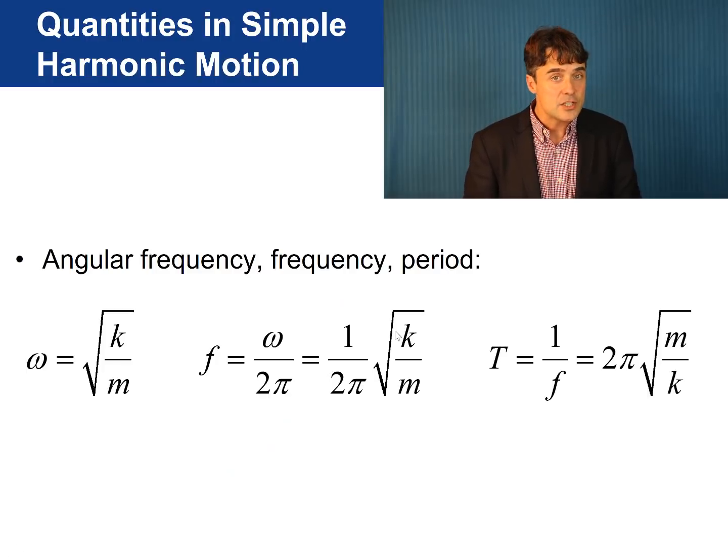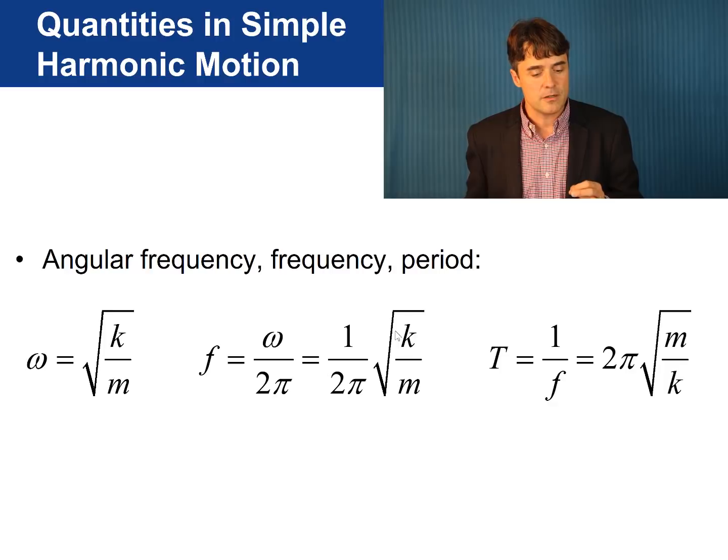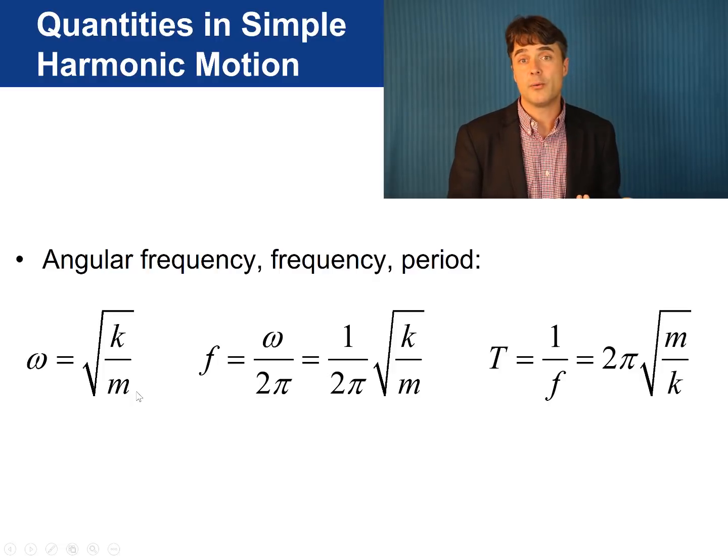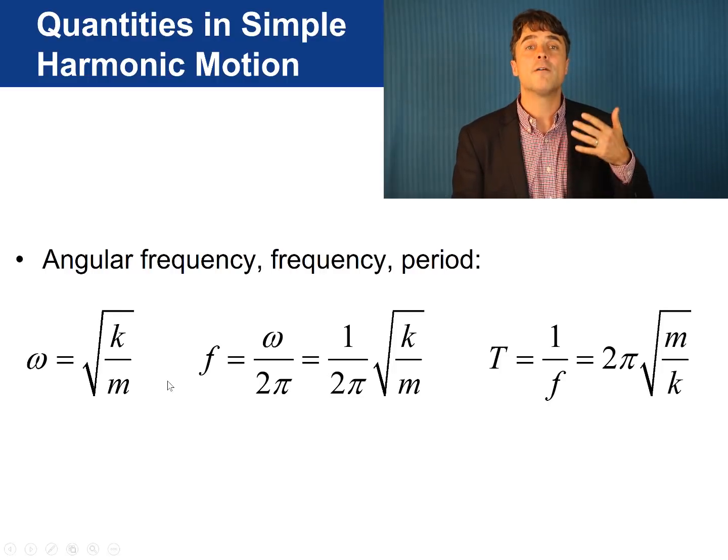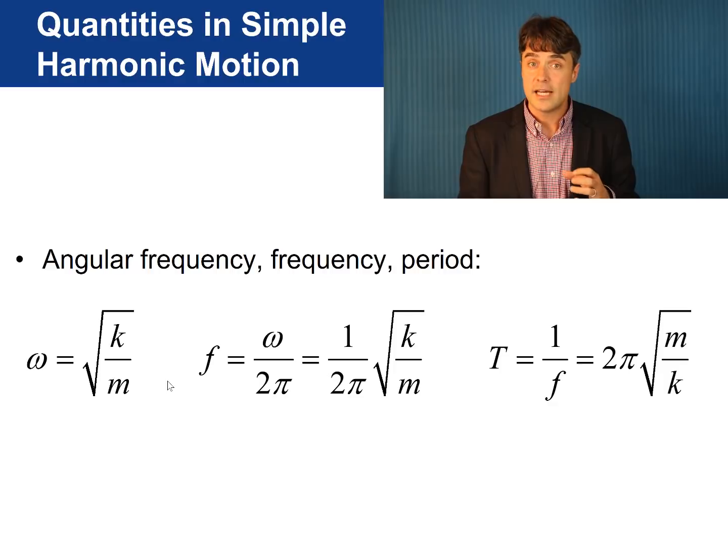Note that omega is not an arbitrary constant. It is set by the physical properties of the system. If the spring is stiffer and k is higher, then omega is higher. If the mass is heavier, then omega is lower. And remember, omega is directly related to the frequency of the oscillation in hertz. And it's also related to the oscillation period by this equation.